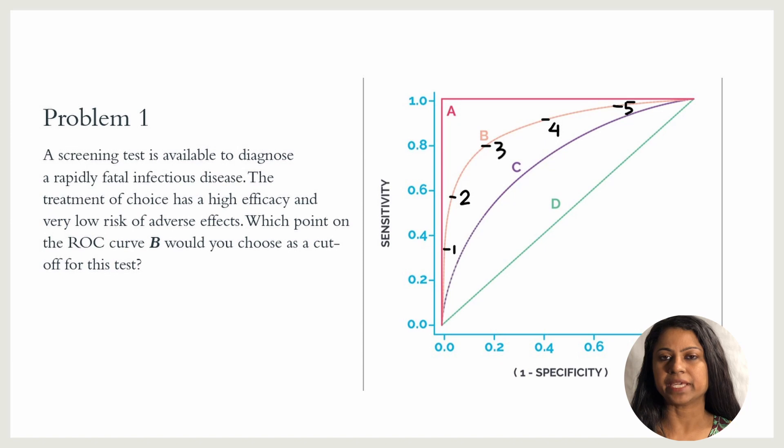For ROC curve B, 0.1 has the lowest sensitivity and highest specificity, while 0.5 has the highest sensitivity but the lowest specificity. For our scenario, we need a test which has a high sensitivity so that we do not miss treating any patients. So for this particular test, 0.5 will be the optimal cut-off value for sensitivity and specificity.